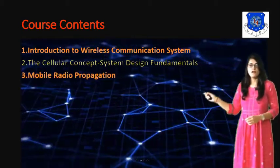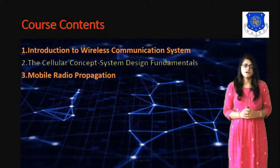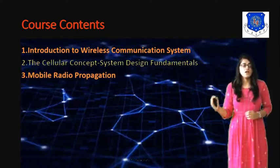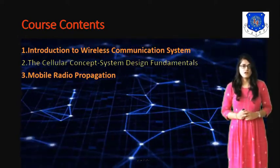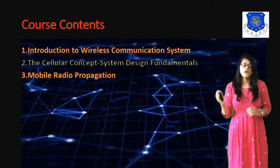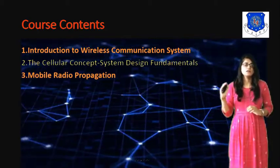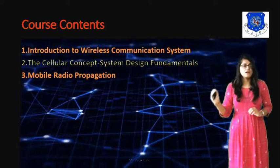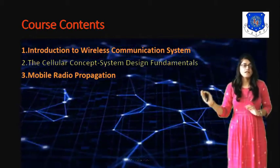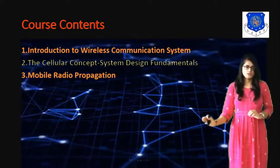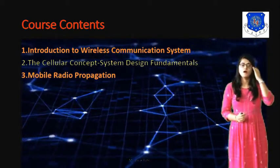In Unit 3, mobile radio propagation is covered. We will discuss the basic propagation methods: reflection, diffraction, and scattering, along with associated models — the two-ray ground reflection model, the knife-edge diffraction model, and the free space propagation model. In all three models, we discuss how to increase received signal power or reduce path loss to improve performance at the receiver end.